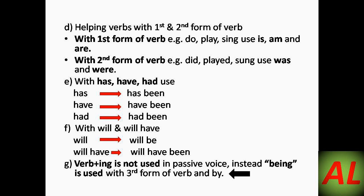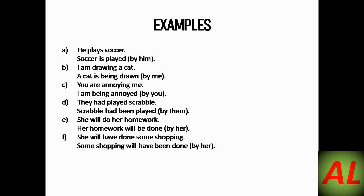Now let's look at examples. First: 'He plays soccer' → 'Soccer is played by him.' Here 'he' has gone to the end of the passive sentence, and 'soccer,' which was the object in active voice, has come to the start. 'Play,' which is 1st form of verb in active voice, has changed to its 3rd form 'played' with 'by.' The helping verb used is 'is' because a 1st form verb was used in active voice.